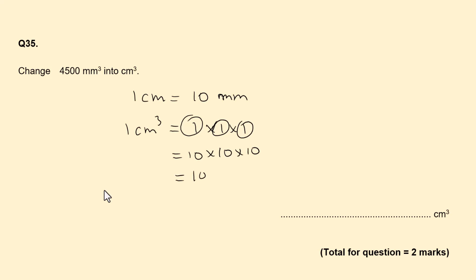That will give us 1000. Now this is the scale factor, the volume scale factor. What we have to do is now divide the 4500 by 1000. That gives us 4.5 centimeters cubed. The answer is 4.5 centimeters cubed.